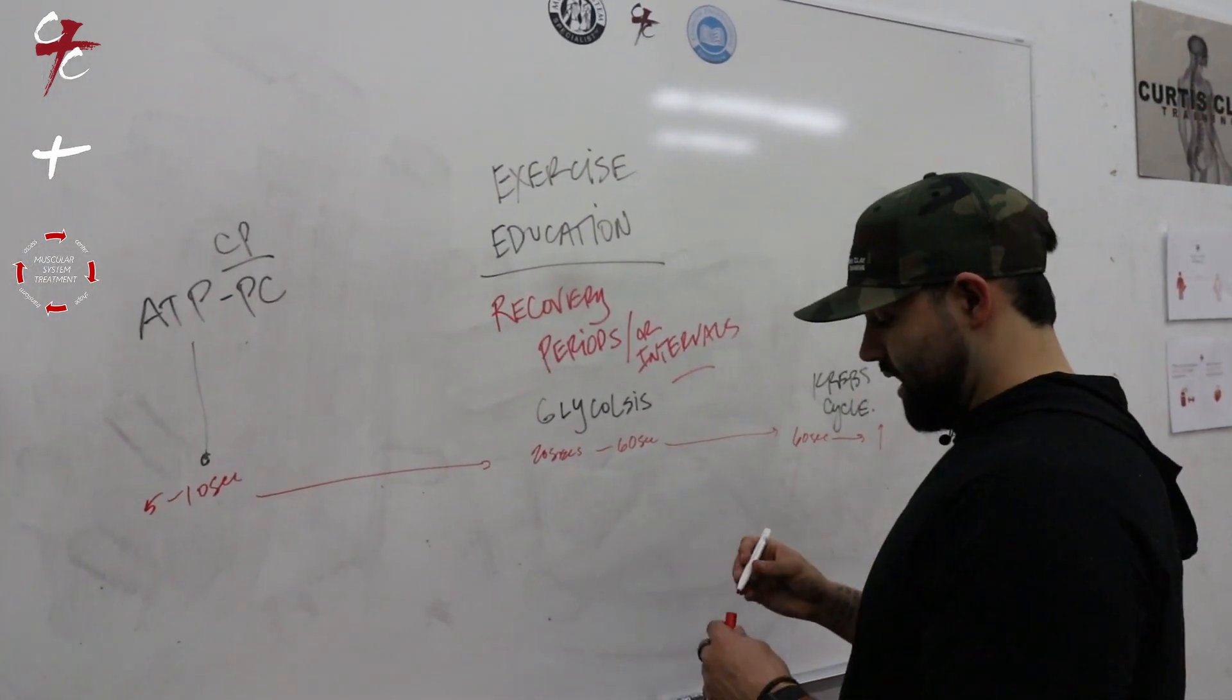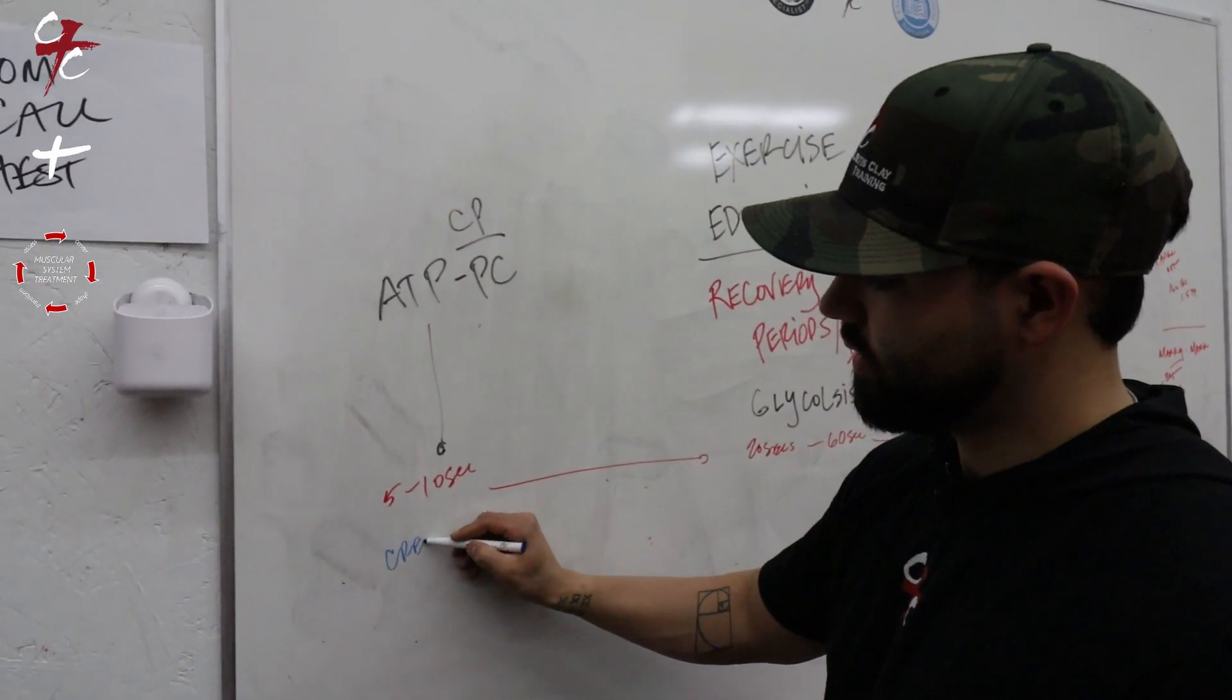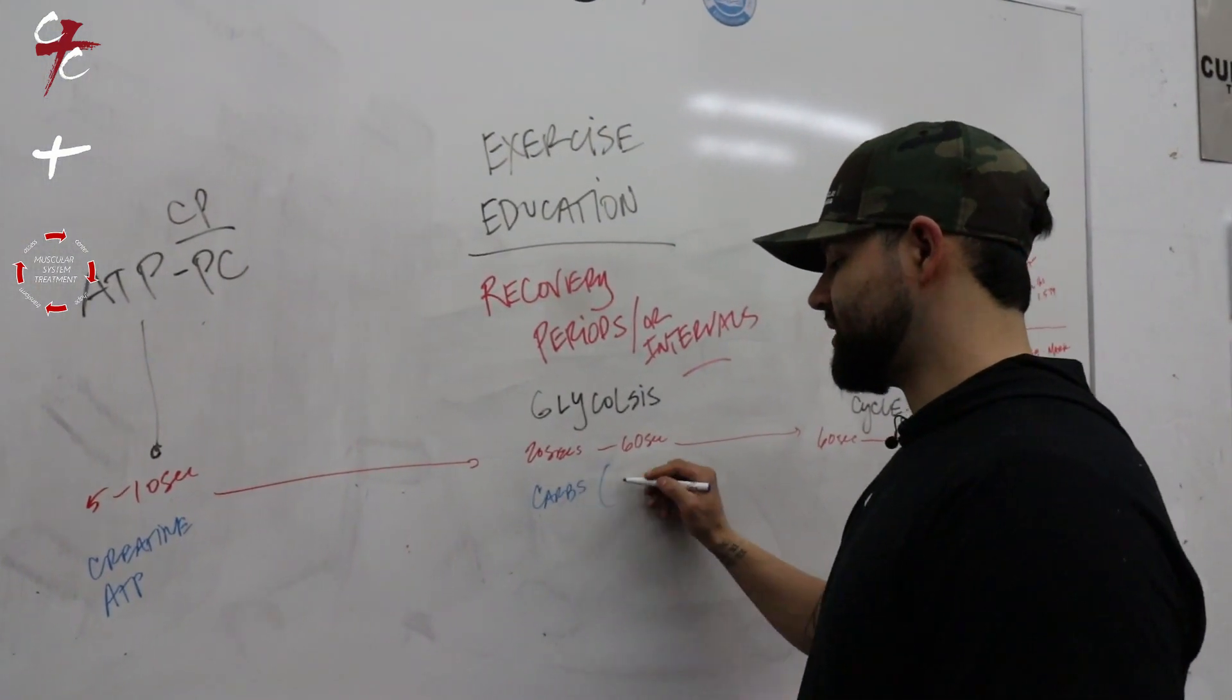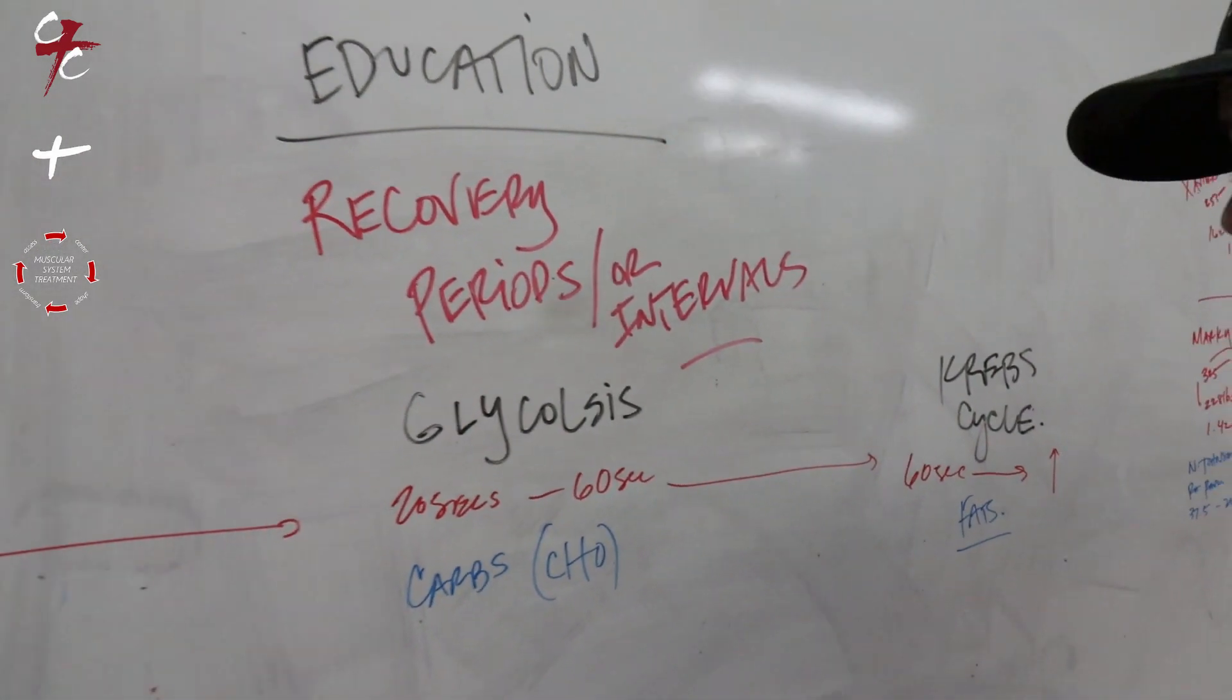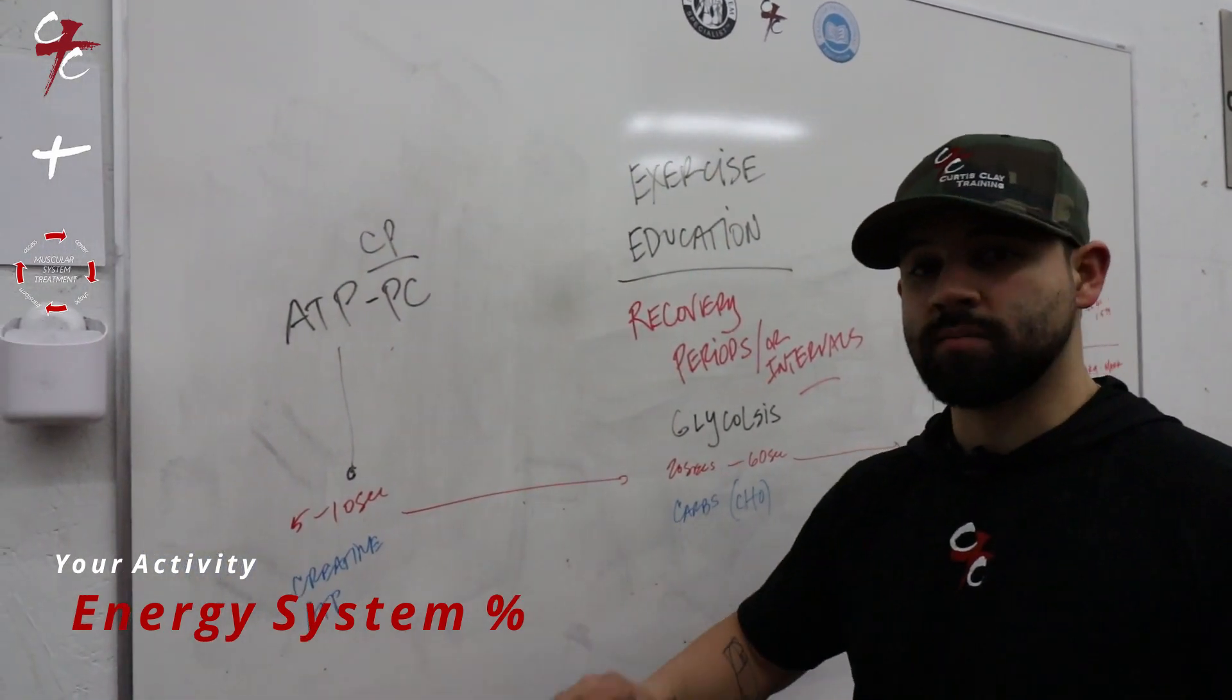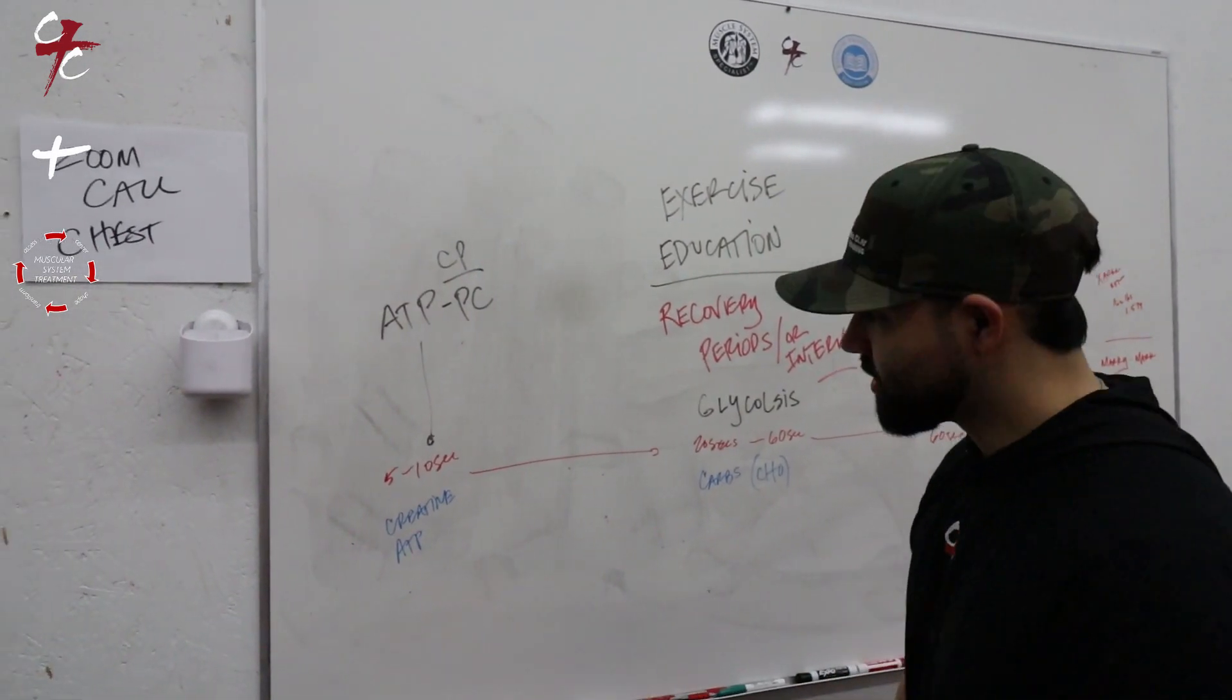These are three different energy systems that we use. This one uses creatine and ATP, this one uses more carbs or CHO, and then we have fats. Depending on the type of activity you're doing, you're going to burn one more than another. None of these systems ever shut off. If we shut one off, it's not good.